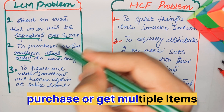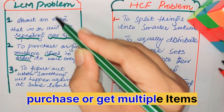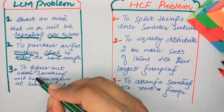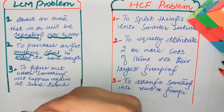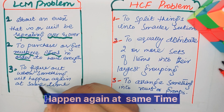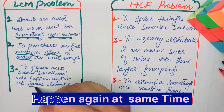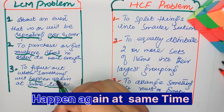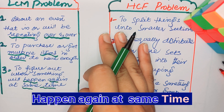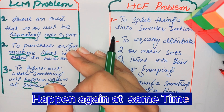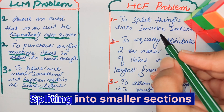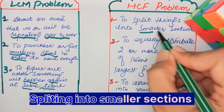The third LCM keyword is to figure out when something will happen again at the same time — when an event will happen again at the same time, it's an LCM problem. Now for HCF problems: when you are splitting things into smaller sections, that indicates an HCF problem.